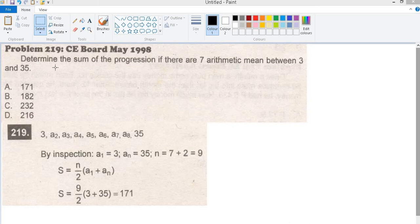Next problem: determine the sum of progression if there are 7 arithmetic mean between 3 and 35. So first term is 3.